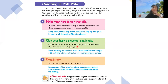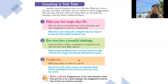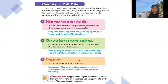Tip two: give your hero a powerful challenge. You can use a monster, a villain, or something very scary that the hero has to fight or solve. Tip three: exaggerate — make your story as wild as it can be. Use very strong, vivid verbs to make the story feel like real life, even though it's fiction. For example, make the villain swipe, kick, punch, or slap.